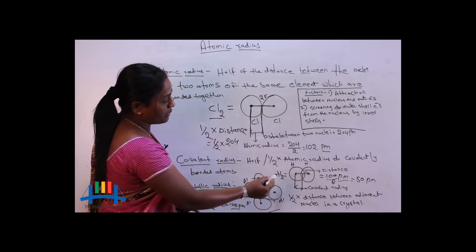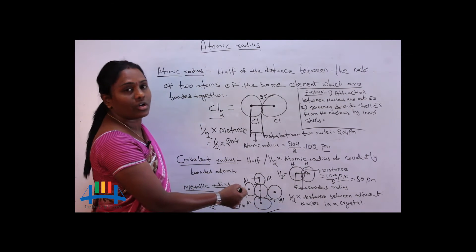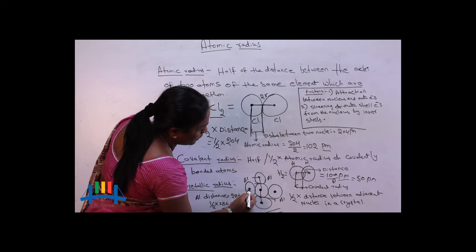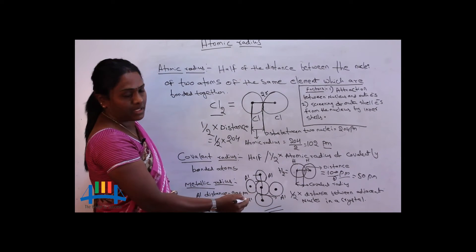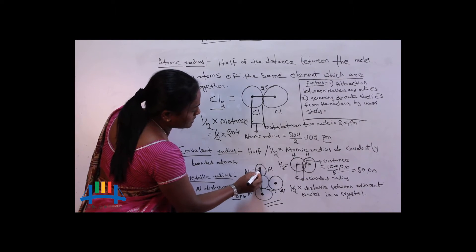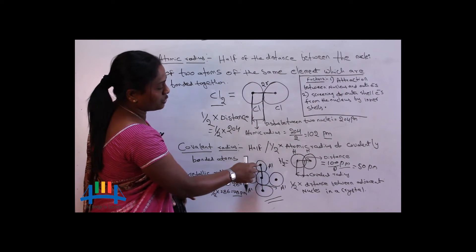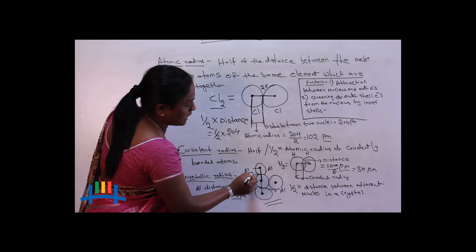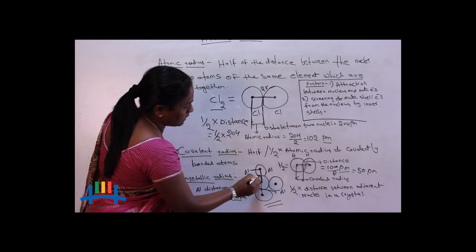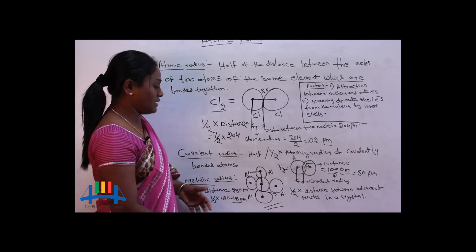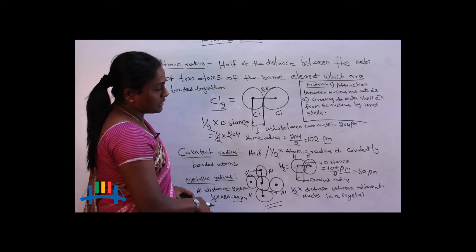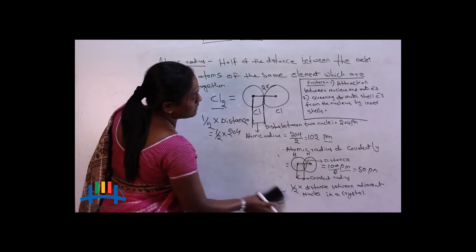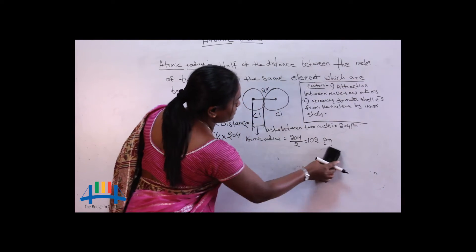In an aluminum crystal, aluminum is surrounded by other aluminum atoms. All these nuclei of particular aluminum atoms are surrounded by each other. The distance between the two nuclei of two metal atoms which are adjacent to each other — half of that distance — is called the metallic radius of that element.